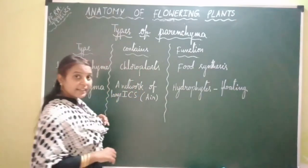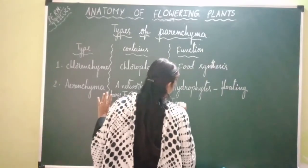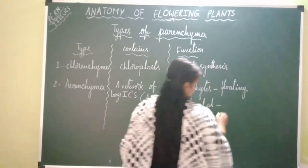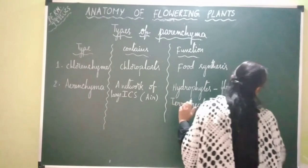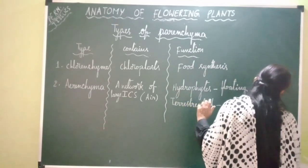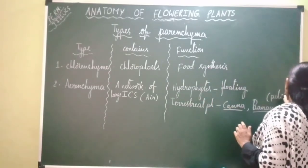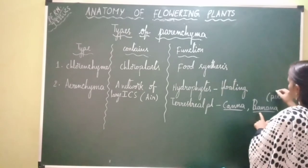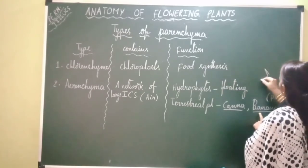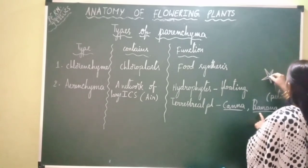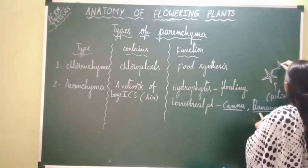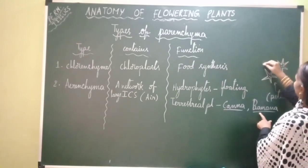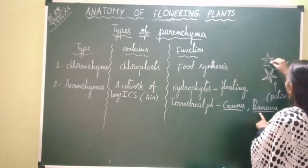Aerenchyma is also present in some terrestrial plants, like canna and banana, where it is present in the petioles of leaves. In canna and banana, the cells of this parenchyma are star-shaped. Hence, it is also called stellate parenchyma or stellate aerenchyma.